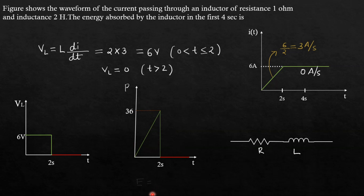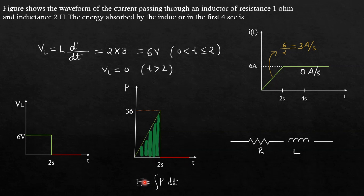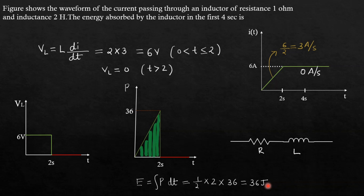Energy is given by the integral of P·dt, which is the area under the power curve. The power waveform from 0 to 2 seconds forms a triangle, so the area is half × base × height = ½ × 2 × 36 = 36 joules. So 36 joules is the energy stored in the inductance.